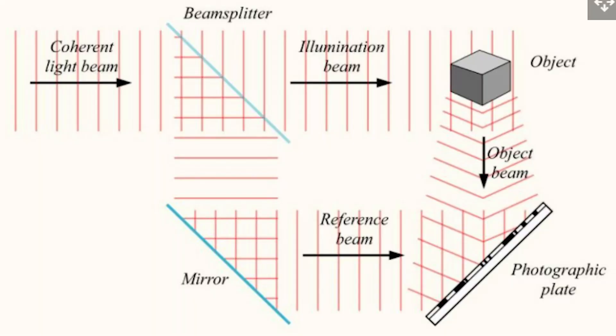A laser beam is split into two identical beams and redirected by the use of mirrors. One of the split beams, the illumination beam or object beam, is directed at the object. Some of the light is reflected off the object onto the recording medium. The second beam, known as the reference beam, is directed onto the recording medium — this way it doesn't conflict with the imagery from the object beam and coordinates with it to create a more precise image.